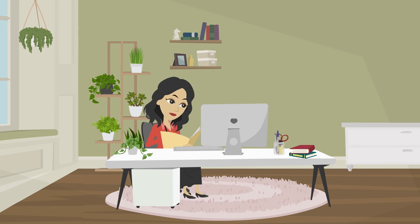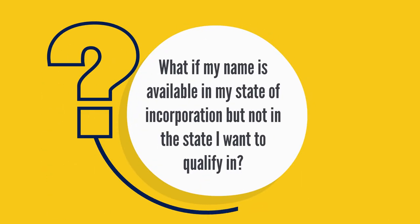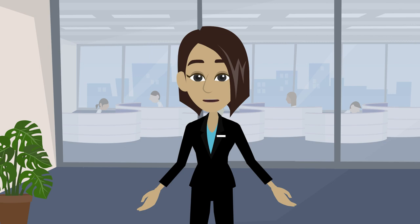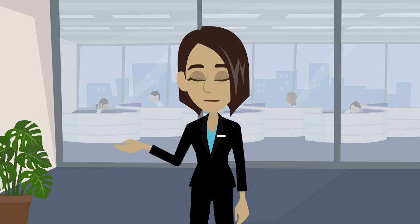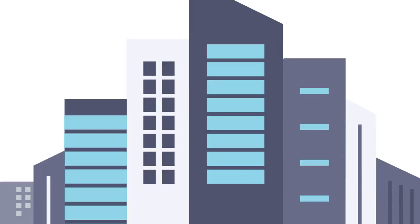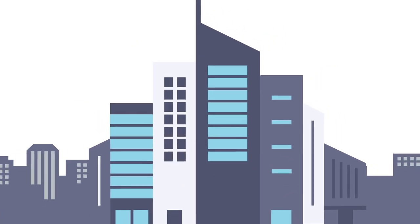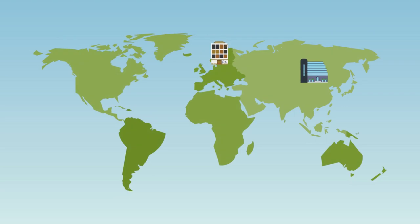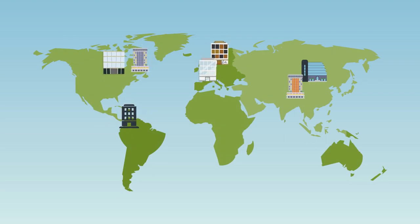Conduct a name availability search in all the jurisdictions you plan to conduct business in. What if my name is available in my state of incorporation but not in the state I want to qualify in? Many states will allow the conflicting name to be put on their record if a fictitious business name is included on the application. This option is only available for companies that are created in another state and wish to qualify their company to conduct business in a new jurisdiction.